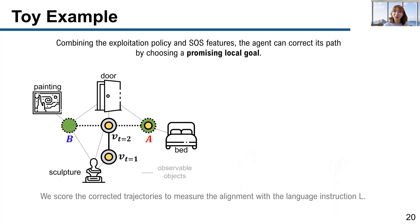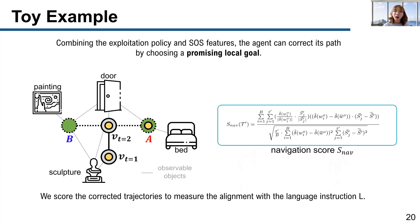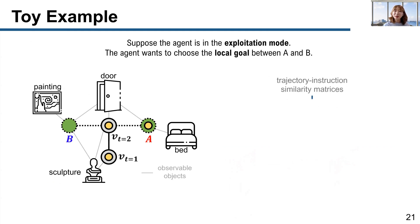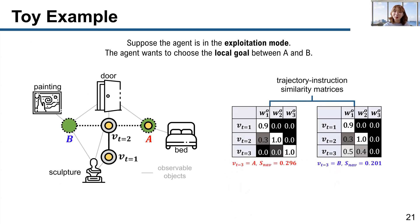We also designed a navigation score which measures the alignment of a trajectory and the language instruction. Here's a quick example. Suppose the yellow nodes at t equals 1 and t equals 2 are the visited nodes, and the agent has to find the local goal from node A and B. If we choose A, the trajectory to the local goal aligns better with the instruction than choosing B. When we calculate the navigation score, we obtain a higher score by choosing A, meaning A is a better local goal than B. We experimentally show that using spectral domain SOS features is more helpful than using spatial domain visual features for searching a local goal.